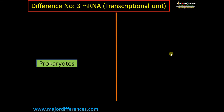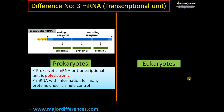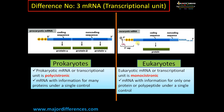Difference number three: transcriptional unit. In prokaryotes, mRNA is polycistronic, meaning mRNA has coded information for the synthesis of many proteins under a single control — for example, three proteins alpha, beta, and gamma coded on the same mRNA. In eukaryotes, mRNA is monocistronic, meaning it has information for a single protein under a single control.